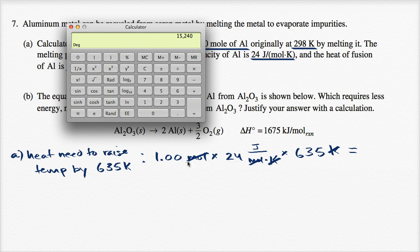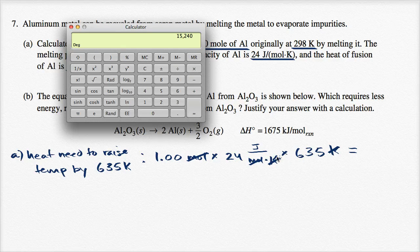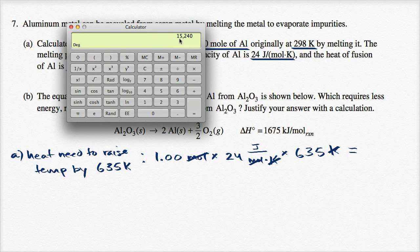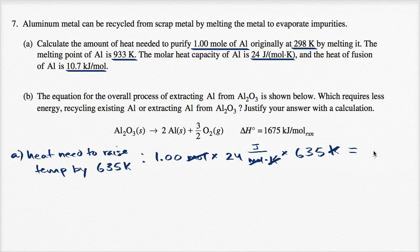We're taking the product of three significant figures, two significant figures, and three significant figures. So we should write only two significant figures. We'll round to 15,000 joules just to raise the temperature to 933 Kelvin.